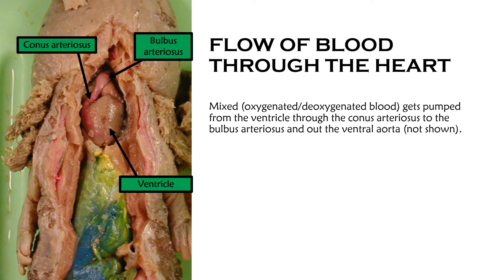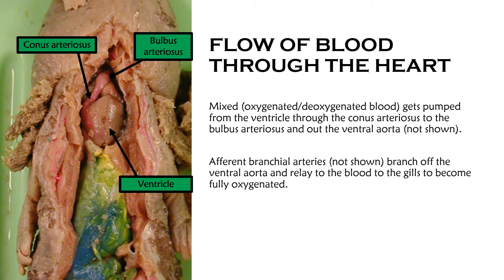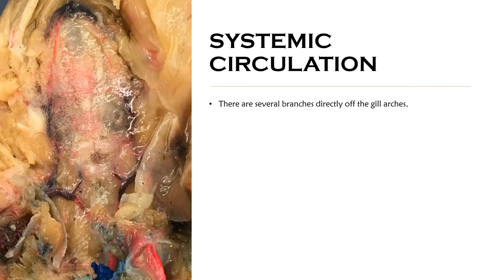Blood then travels out the ventral aorta. The afferent bronchial arteries branch off the ventral aorta and relay blood to the gills to become fully oxygenated. The ventral aorta and the afferent bronchial arteries are not shown here, but think of afferent as going towards the gills. Now that we have oxygenated blood at the gills, we are in systemic circulation — blood going to the rest of the body.